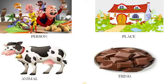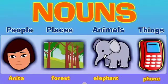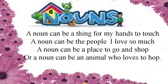So students, jitne bhi name hote hain, they are called noun or naming words. Look at another example of naming words. People — Anita. Place — forest. Animals — elephant. Things — phone.